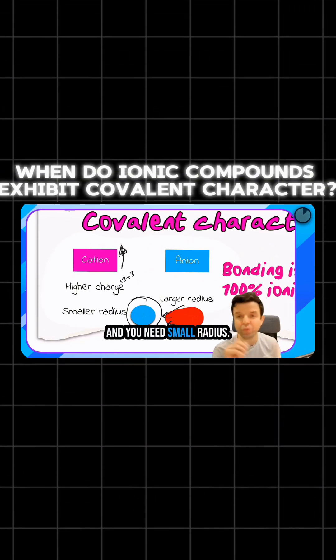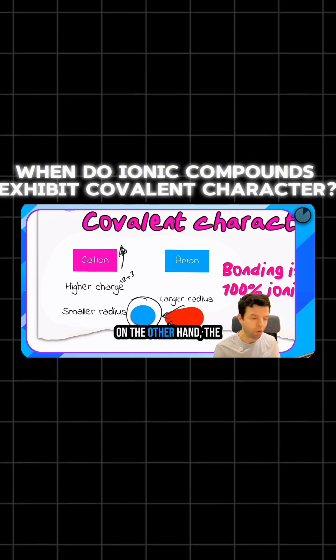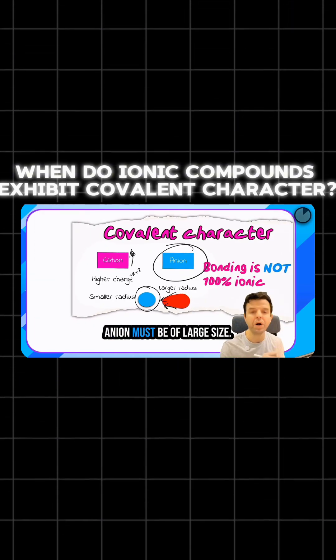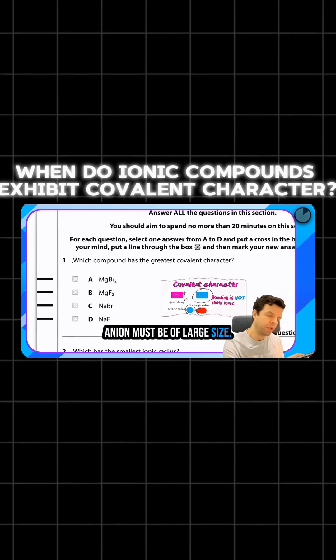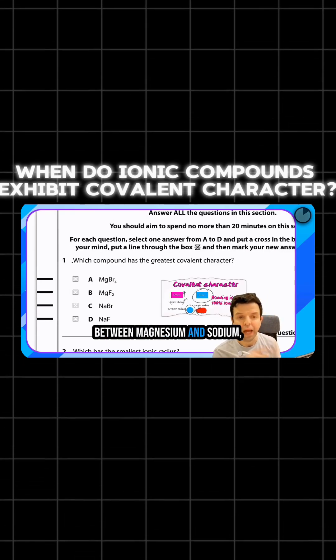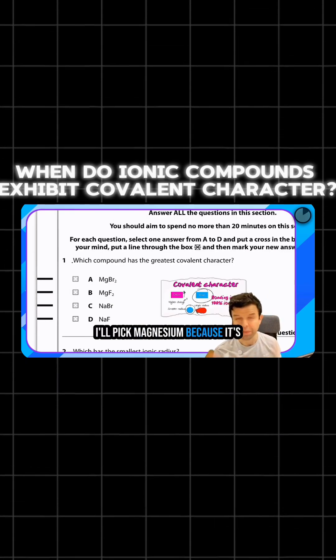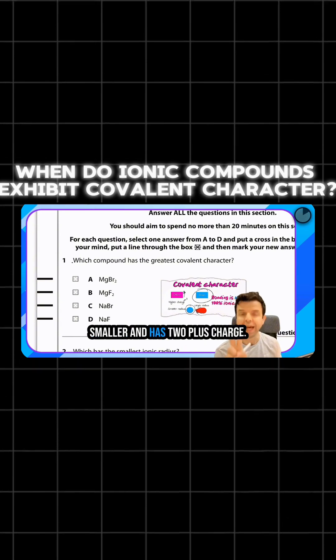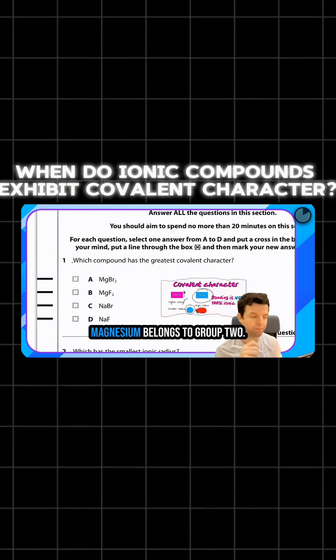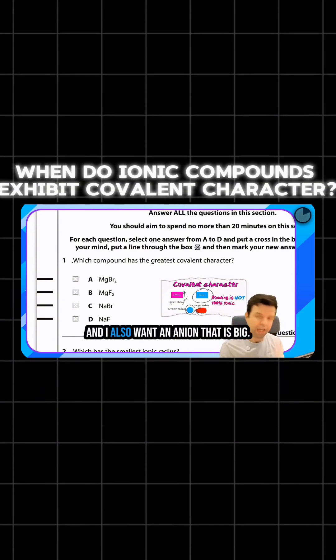Think about it: what factors make a cation have high charge density? You need extra charge like two plus or three plus, and you need small radius. On the other hand, the anion must be of large size.